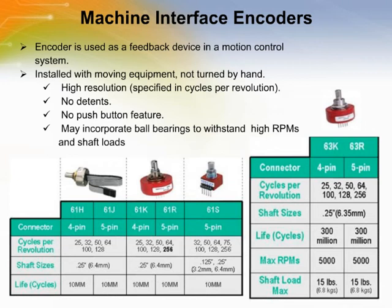Other machine interface applications require encoders that can withstand high shaft speeds and some level of shaft loading. Greyhill produced the 63K and 63R ball bearing encoders for these applications. Applications for the 63K and 63R include propane gas flow meters, bulk processing flow meters, fluid flow meters, automated vial samplers, and lift trucks.